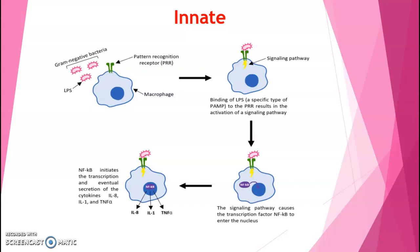This immune response is evolutionarily conserved across many different species, with all multicellular organisms having some variation of an innate response. The innate immune system consists of physical barriers such as skin and mucous membranes, various cell types like neutrophils, macrophages, and monocytes, and soluble factors including cytokines and complement.